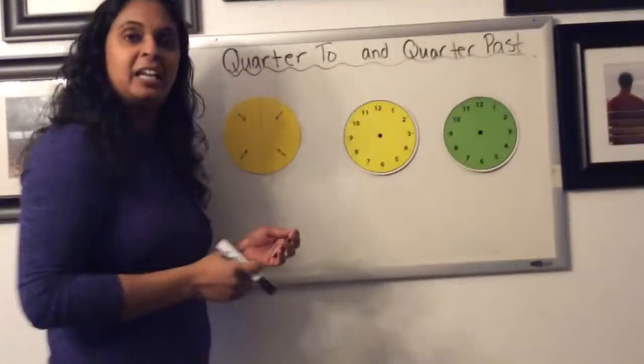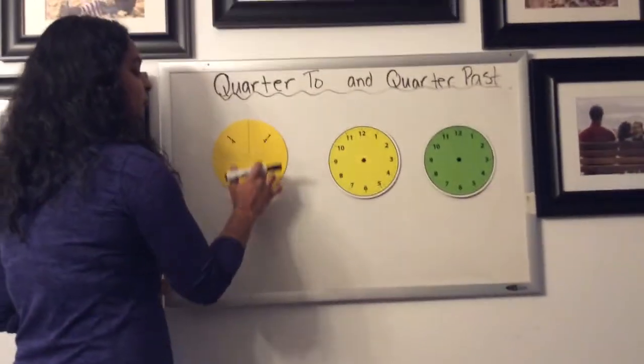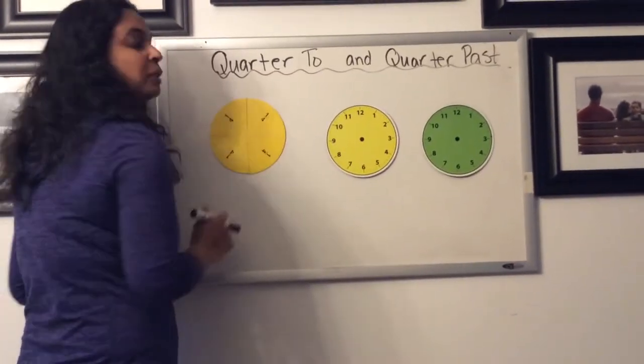If you think about money, you can think about four quarters making one whole dollar. So four quarters here, four fourths, will make one whole.